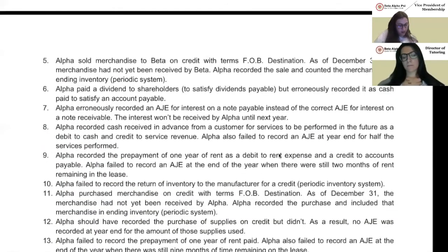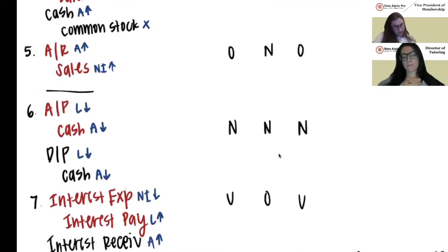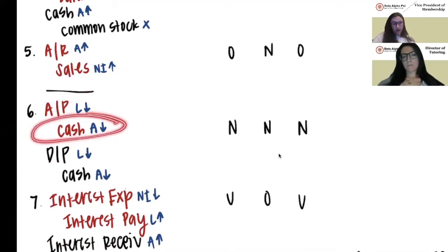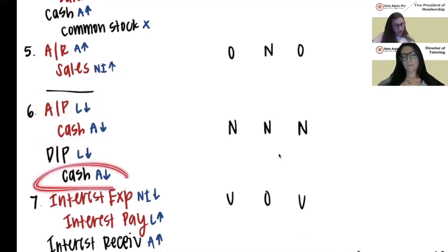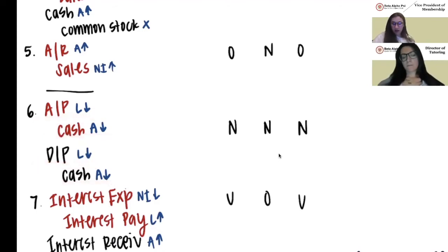Number six: Alpha paid a dividend to shareholders to satisfy dividends payable but recorded it as cash paid to satisfy an account payable. They debited accounts payable and credited cash when they should have debited dividends payable and credited cash. The debit to accounts payable lowered liabilities and the credit to cash lowered assets. The correct entries — debit dividends payable, credit cash — would have also lowered liabilities and assets in the same way.